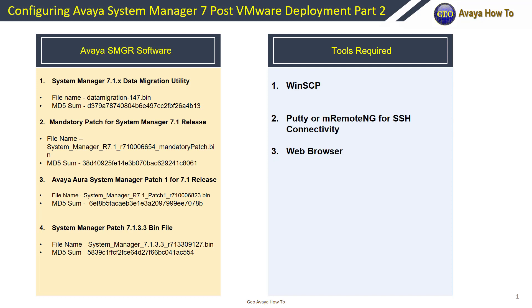As mentioned before, on the left-hand side is the software we will use today. If you would like to find out how to download the software, take a look at part one of deploying Avaya System Manager 7. On the right-hand side are the tools that we will need to perform these tasks, and they are WinSCP, PuTTY or RemoteNG, and a web browser.